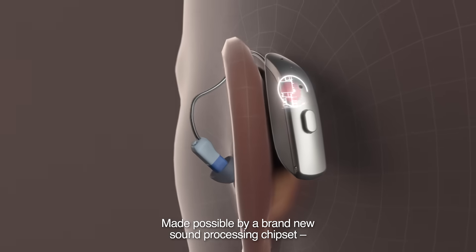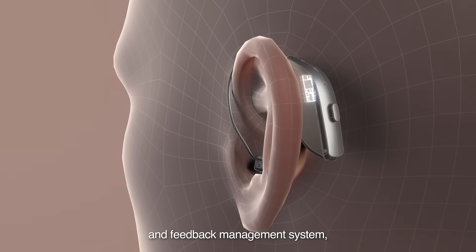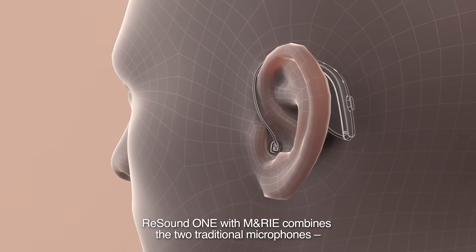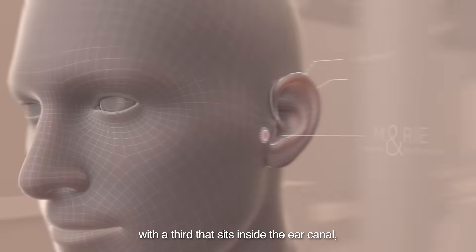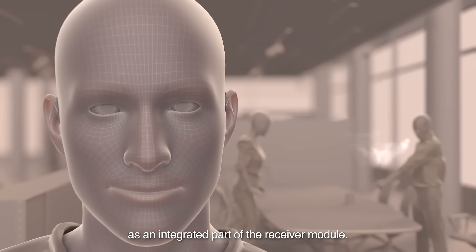Made possible by a brand new sound processing chipset and feedback management system, it's a major advancement in technology. ReSound One with M&RIE combines the two traditional microphones with a third that sits inside the ear canal as an integrated part of the receiver module.